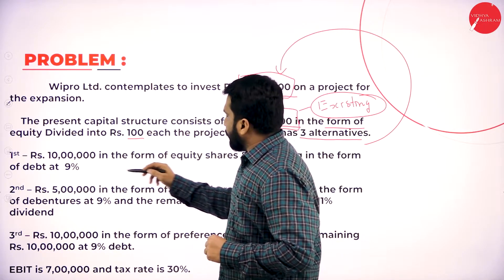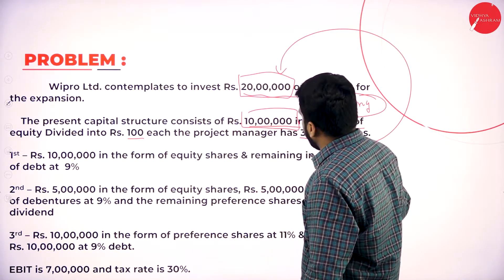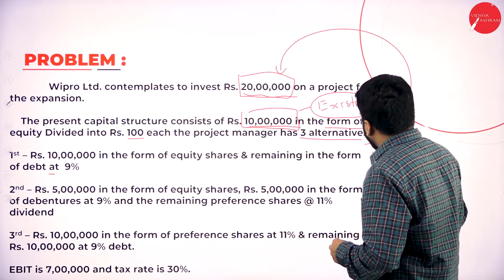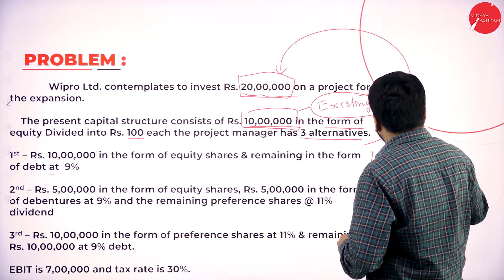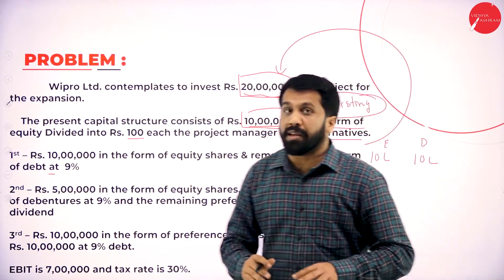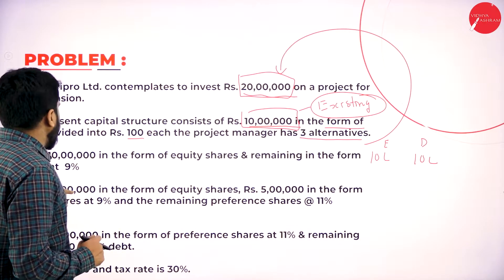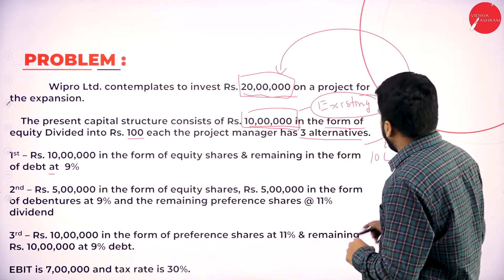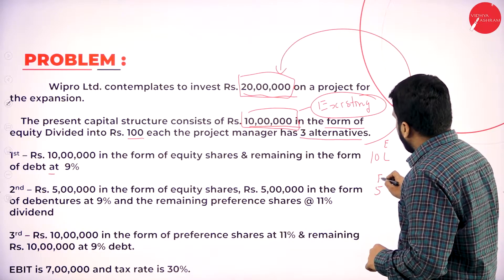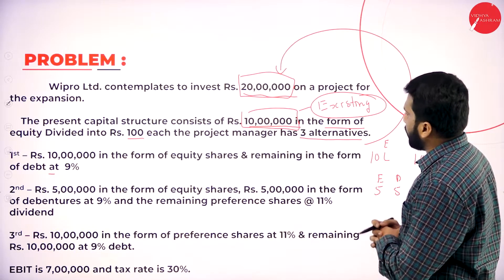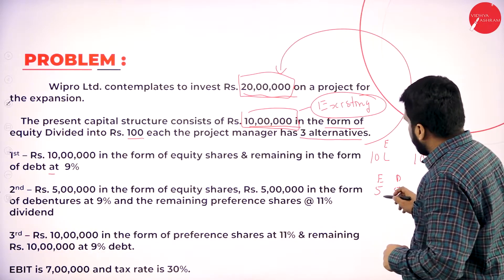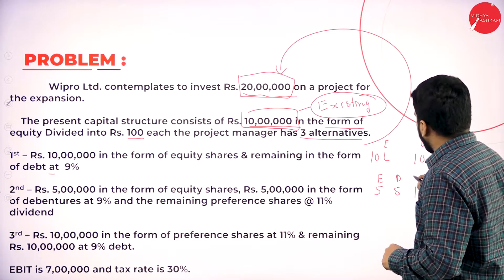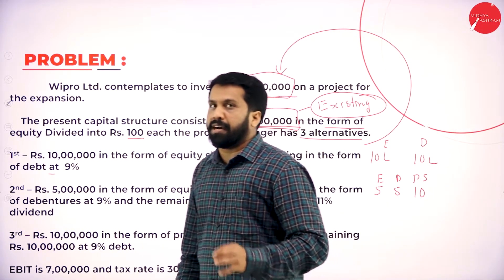First one: 10 lakh in the form of equities, remaining in the form of debenture. How much we needed? 20 lakh. So 10 lakh in the form of equity, 10 lakh in the form of debenture. Second: rupees 5 lakh in the form of equities, 5 lakh in the form of debenture — that's 5 lakh equity, 5 lakh debenture. Remaining preferences: 5 plus 5 is 10, so the balance of 10 will be your preferences.